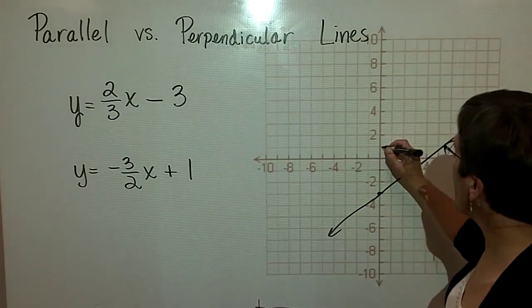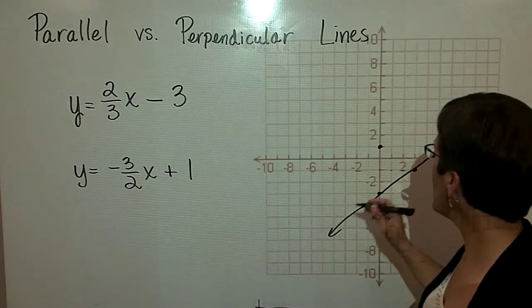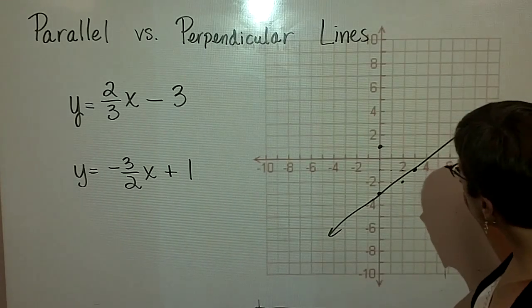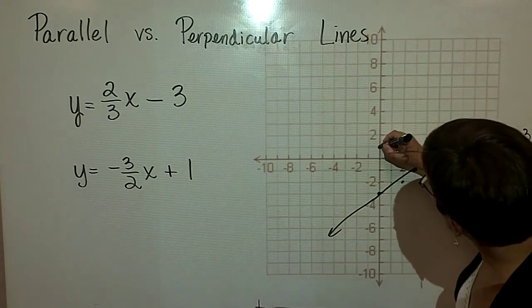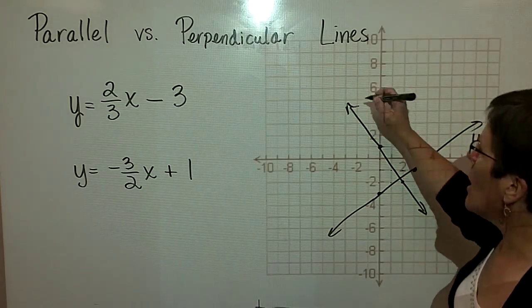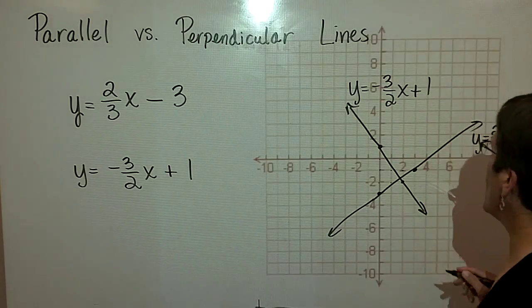The second equation's y-intercept is a positive 1, and the slope is a negative 3 over a positive 2. So I'm going to go down 3 and over 2 and graph the line for y equals negative 3 halves x plus 1.